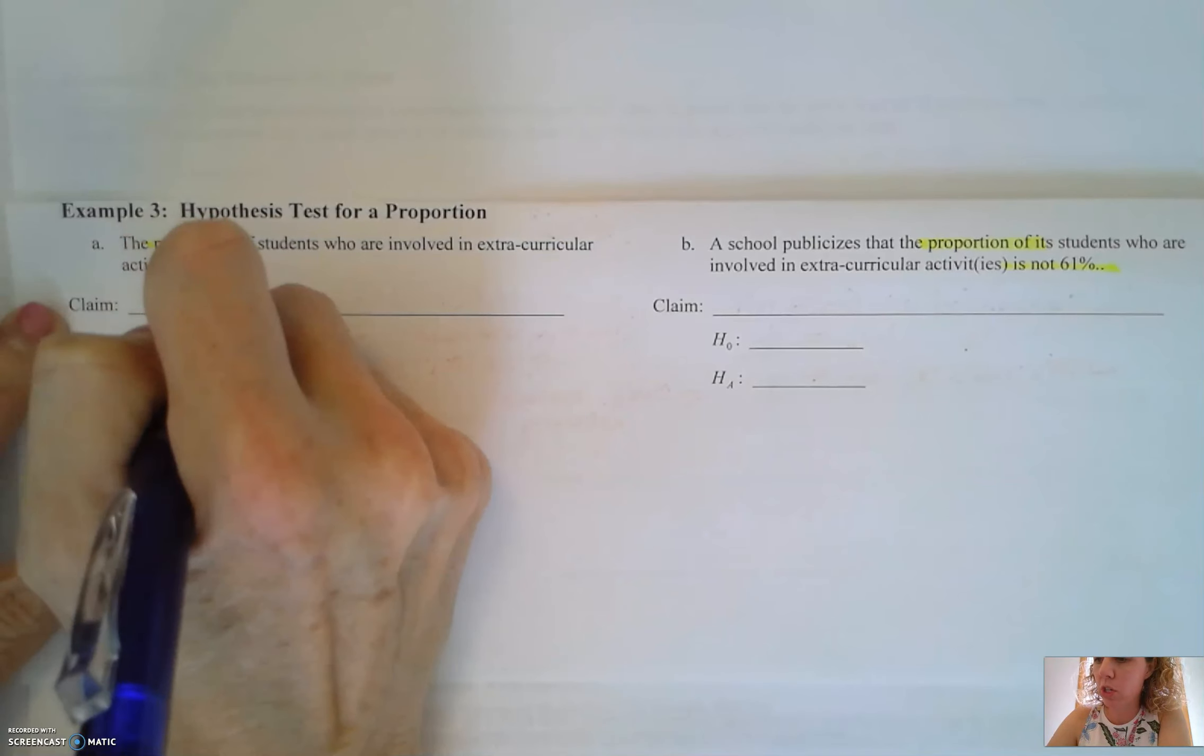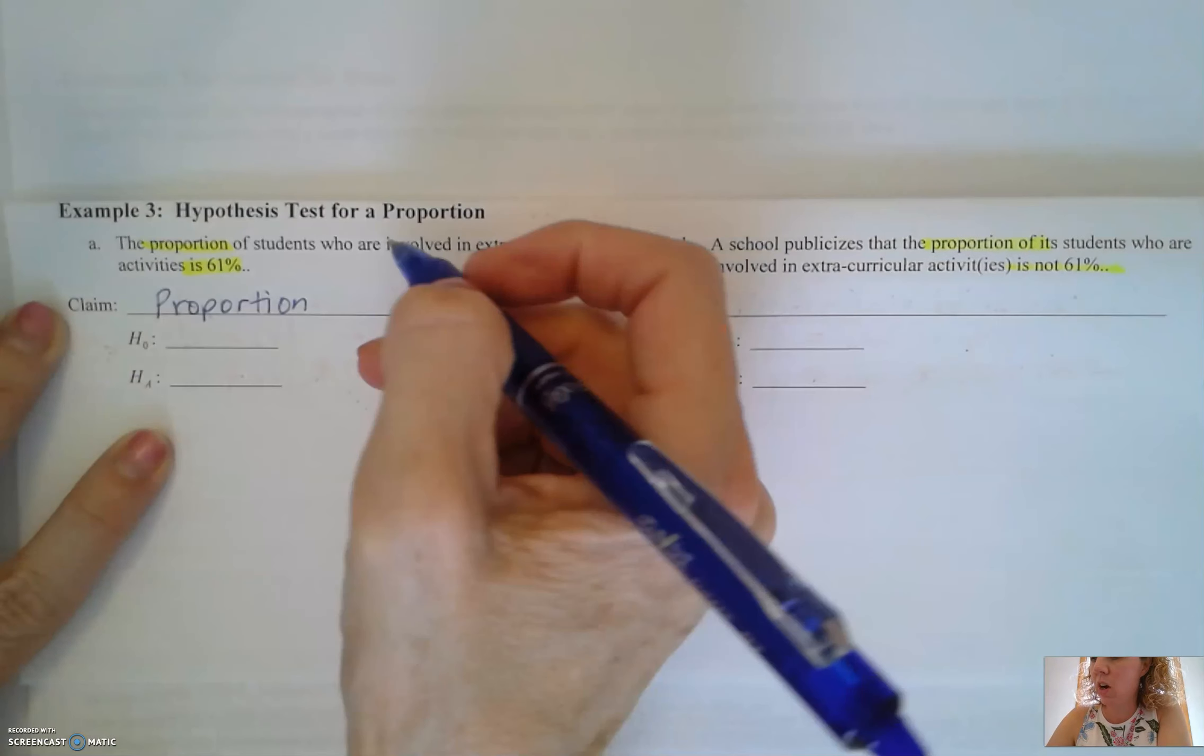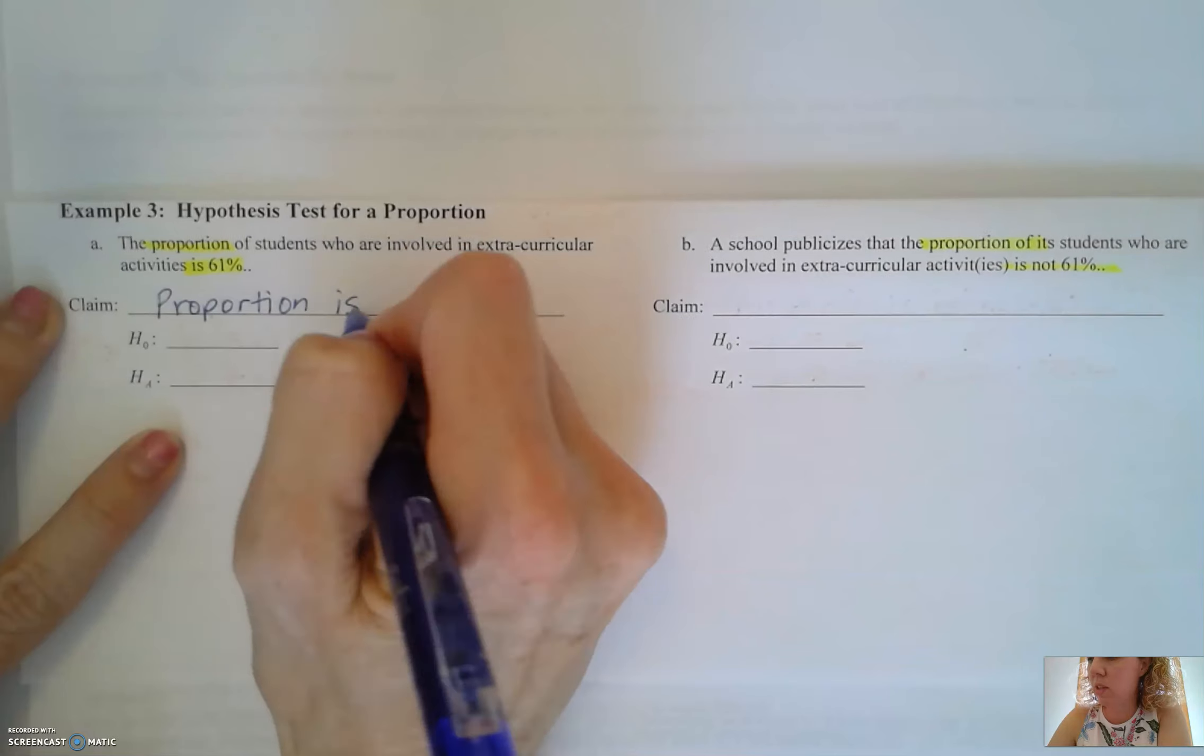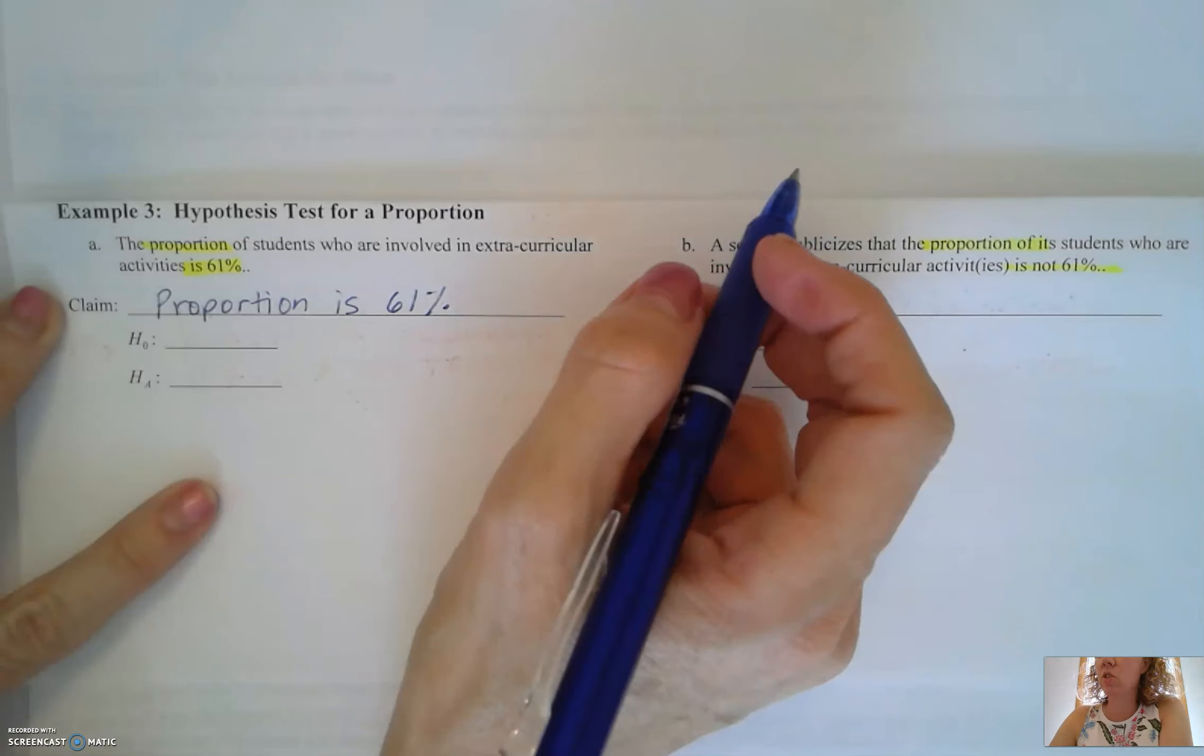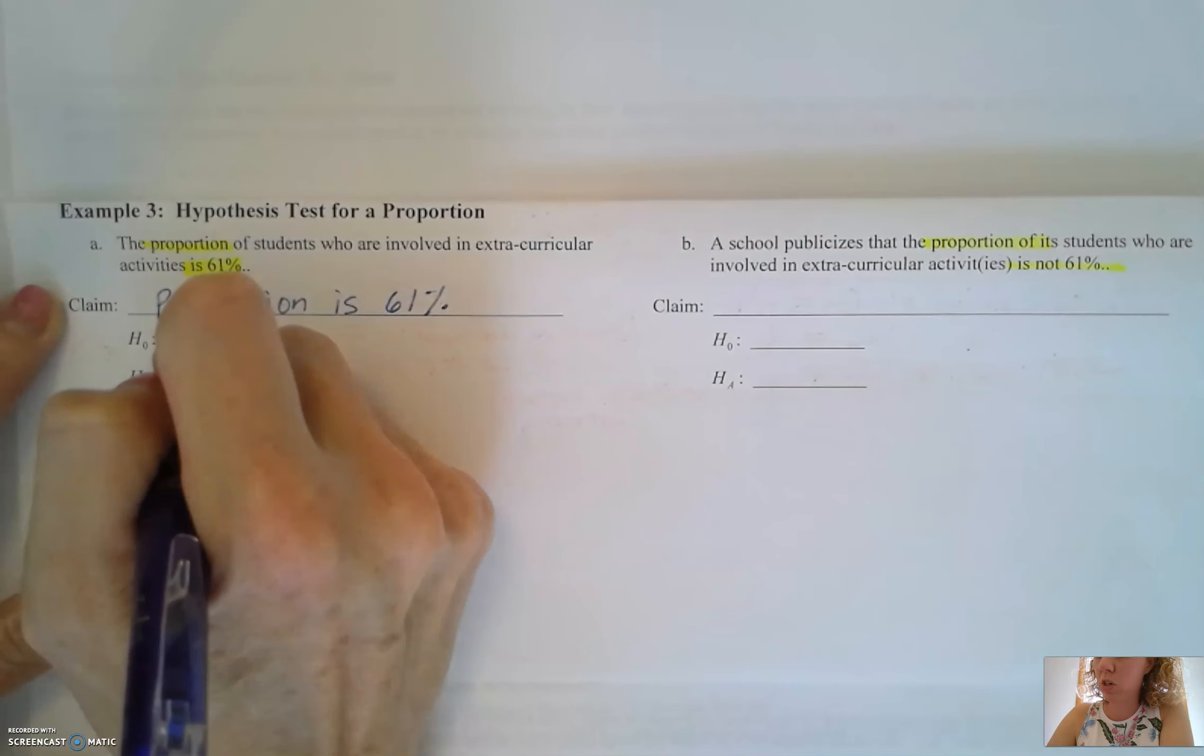We're testing a claim about a proportion and our inequality or equality is going to be 61%. So I'm writing down that first. Since we're testing a claim about a proportion we're going to use the population proportion symbol P.